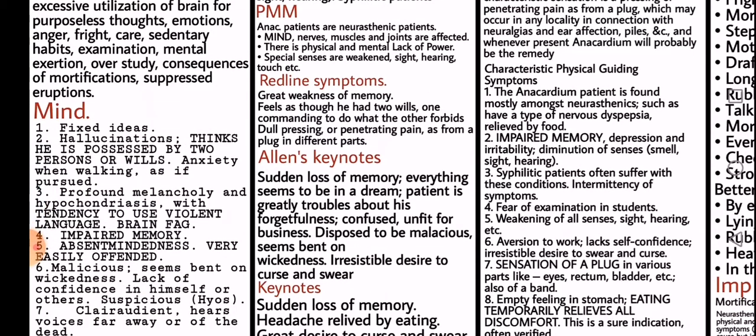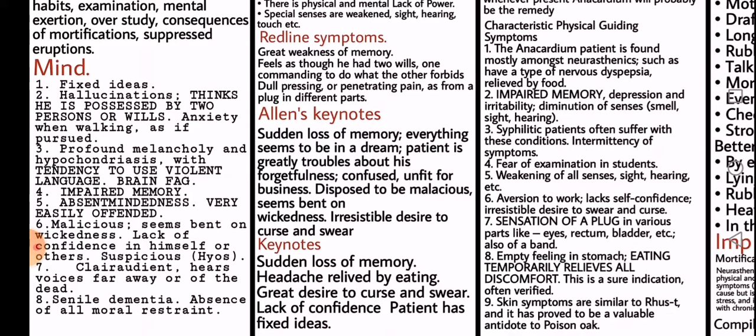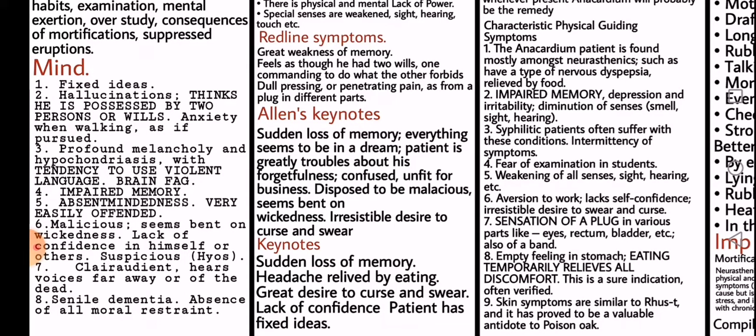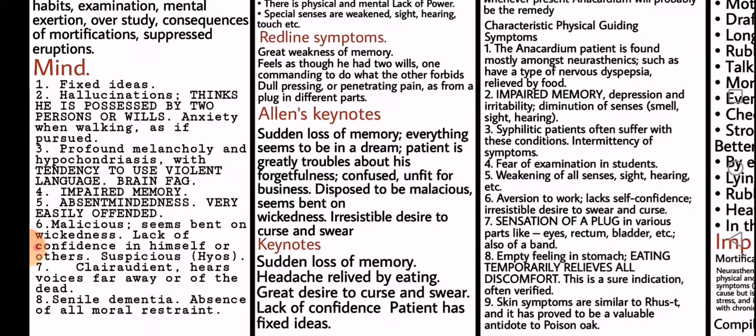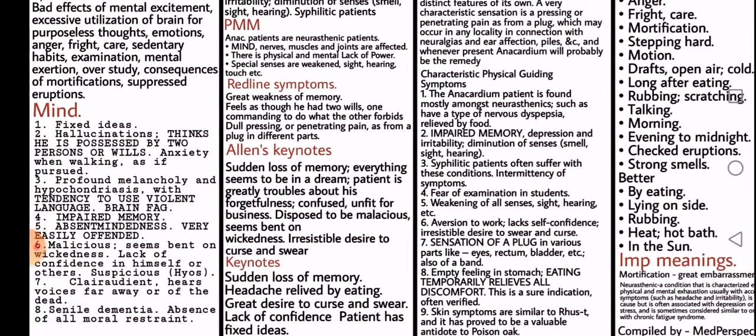Now we look into the mind of Anacardium. Common features and keynotes of the mind: the patient has fixed ideas, there is hallucination, thinks he is possessed by two persons or wills, anxiety when walking as if pursued, profound melancholy and hypochondriasis with tendency to violent language and brain fag, impaired memory, absent-mindedness, very easily offended, malicious, seems bent on wickedness, lack of confidence in himself or others. He is suspicious like a Hyoscyamus patient. Clairaudient — meaning he hears voices far away or of the dead. Senile dementia and absence of all moral restraint.